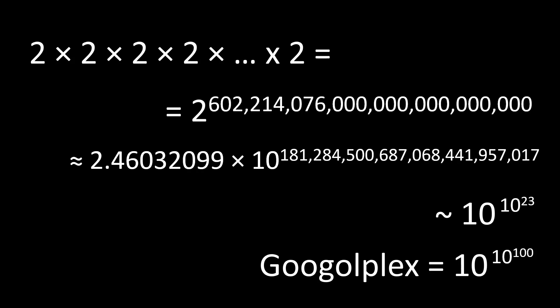Physicists call numbers like these very large numbers because they totally swamp any other number in an equation. You can add, subtract, multiply, and divide very large numbers by regular large numbers, and they don't really change — not in a way we care about anyway.